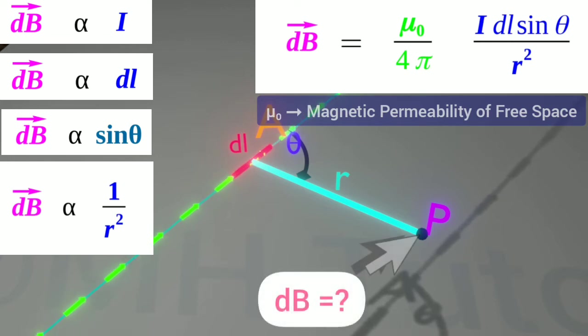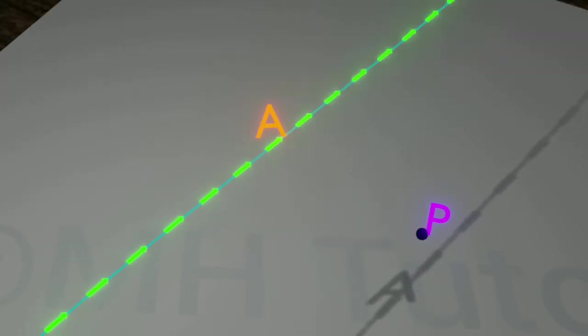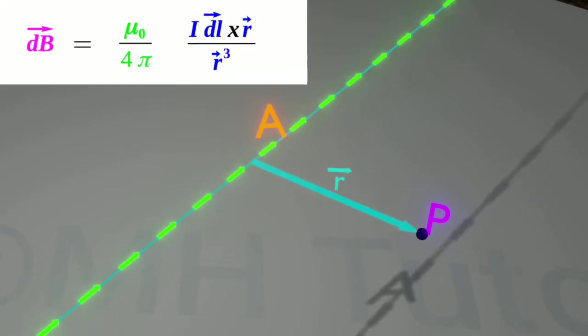Here, in this case, the direction of the magnetic field is not clear. To get its direction, we need to explain the vector form of the law. And here it is. The vector form of this law is written like this.